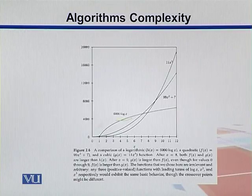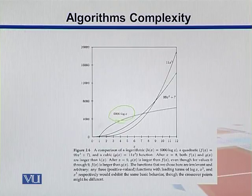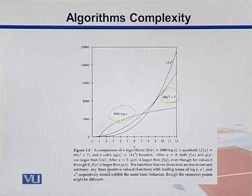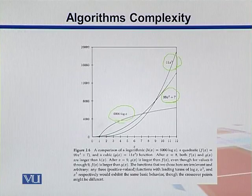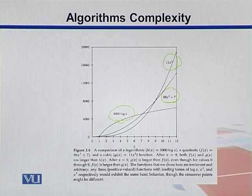Its complexity is going in a logarithmic scale. The other one is, we have square, right, and the other one is cubic. The complexity of this algorithm depends upon the cube of this variable. Which one is computationally expensive?